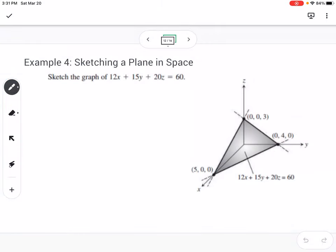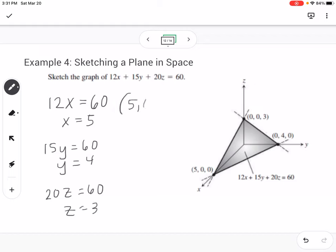An example of sketching a plane in space. If we're sketching the graph of 12x + 15y + 20z = 60, what you would want to do is plug in 0 for your other variables. If I plug in 0 for y and z, then I have 12x = 60, so x = 5. I would get 15y = 60, so y = 4, and 20z = 60, so z = 3. So that tells me the points are (5, 0, 0), (0, 4, 0), and (0, 0, 3). You can see it forms a triangular plane with those three points, and that represents that equation of a plane in space.